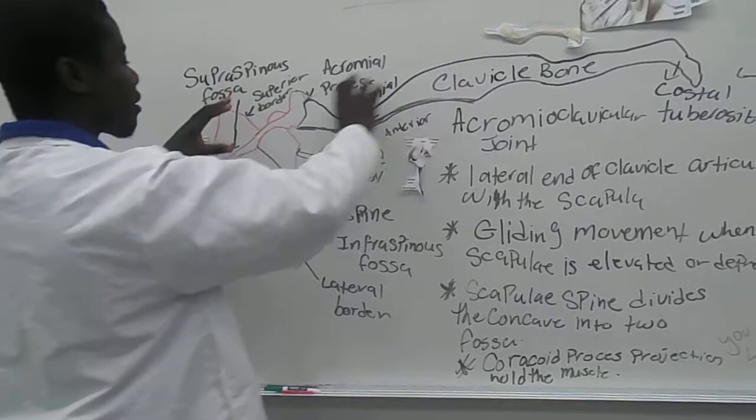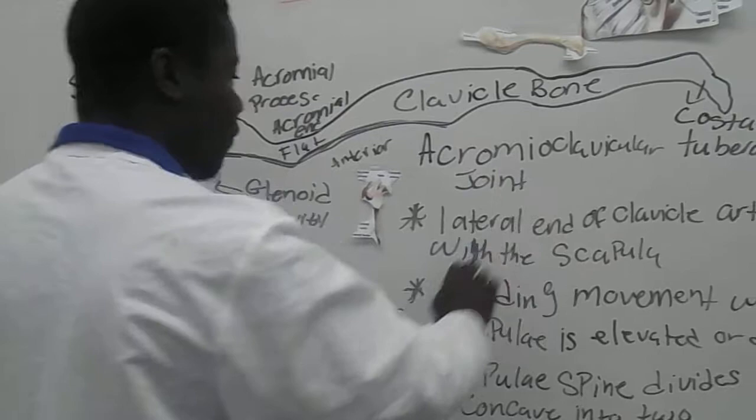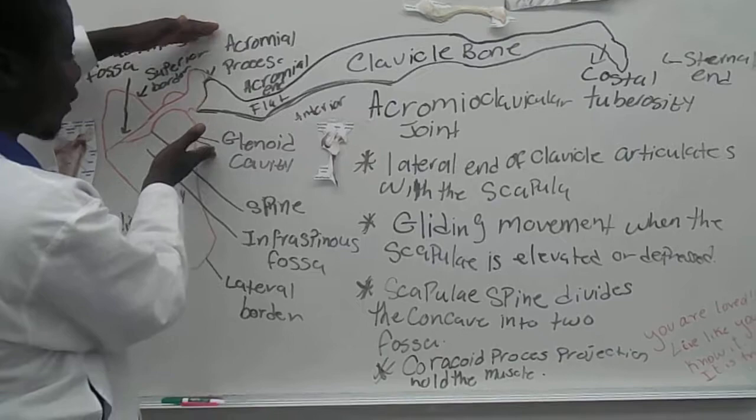Now where the end of the clavicle bone connects to the scapula makes the acromioclavicular joint. The lateral end of the clavicle articulates with the scapula right here.